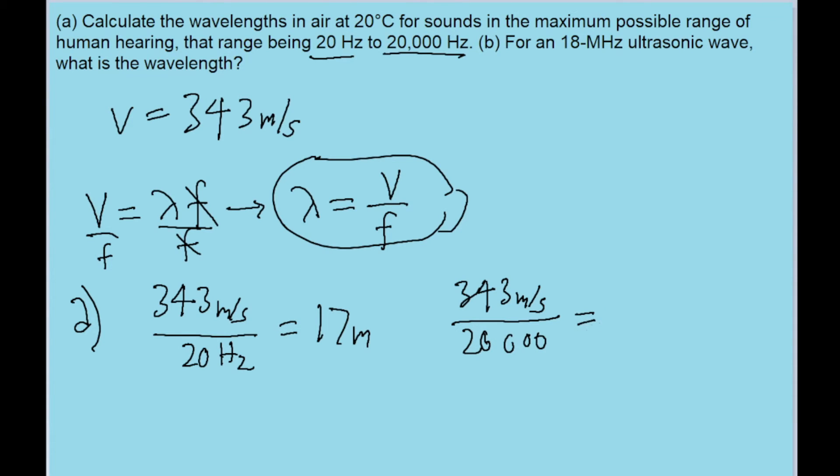If you put this into our calculator, then we find a wavelength of about 1.7 times 10 to the power of negative 2 meters, which is much smaller. And if you feel like doing the conversion, this can also be seen as equal to about 1.7 centimeters.